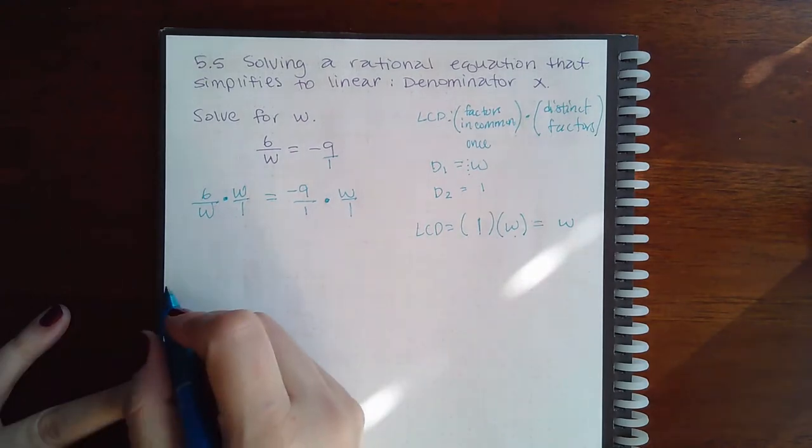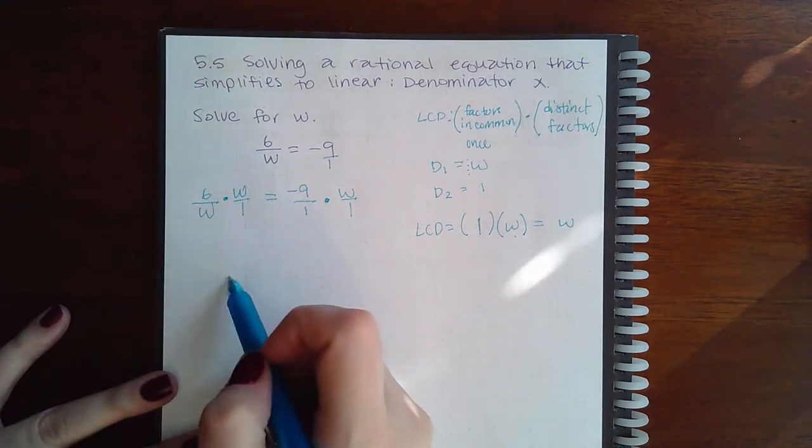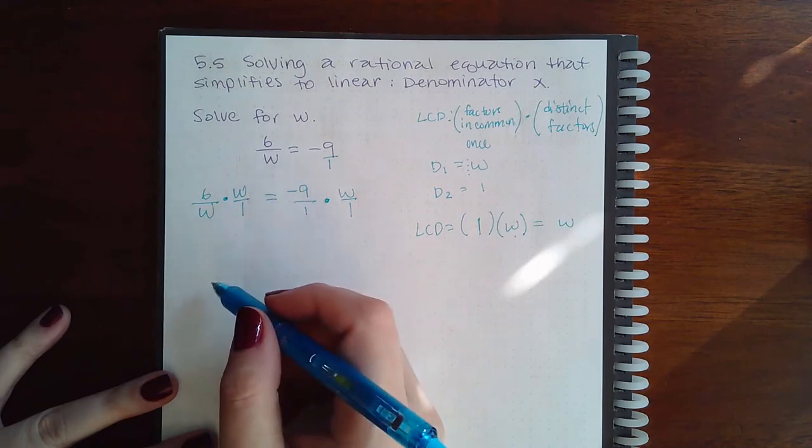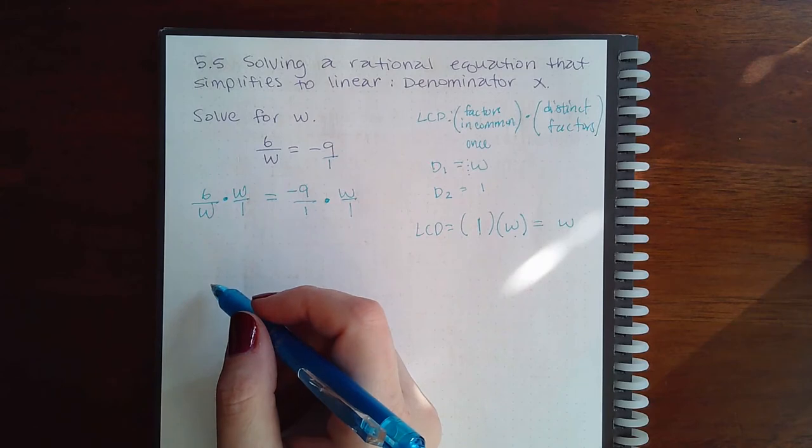When I multiply these, you can either multiply first and then reduce, or reduce first and then multiply. That choice is up to you, but you do have to do both steps.